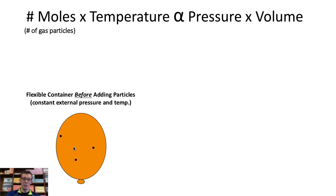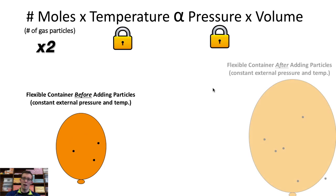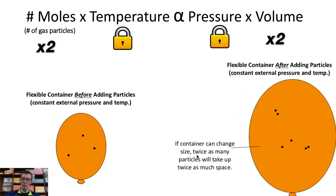And if the container that we stored the gas in was flexible, for instance a balloon, and we were to double the number of moles in the container while keeping the temperature and the pressure constant, now the volume would double as well, because twice as many particles tend to take up twice as much space.